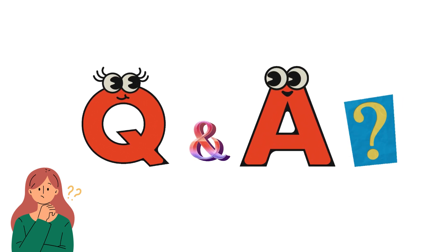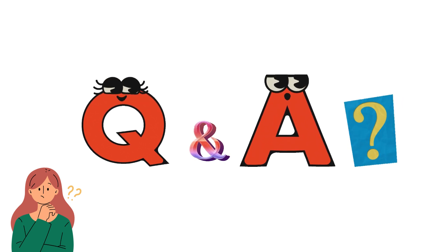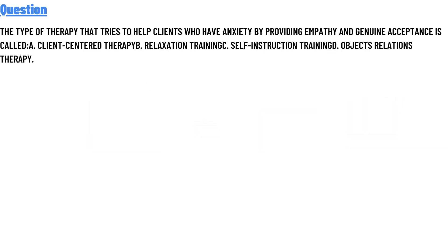Our question today is: the type of therapy that tries to help clients who have anxiety by providing empathy and genuine acceptance is called — option A: client-centered therapy, option B: relaxation training, option C: self-instructions training,